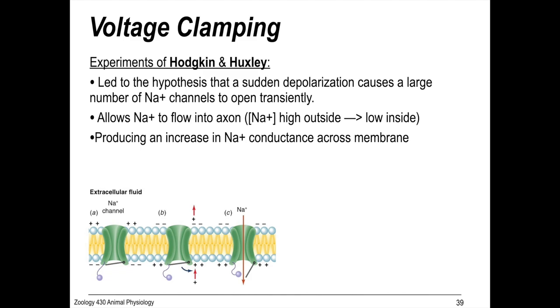Which allows a flood of sodium into the axon because sodium is high outside and low inside. That's producing increase in sodium conductance across the membrane because these ions, the charge is moving through.